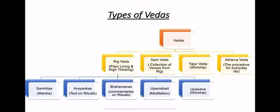Now, the types of Vedas. For simplicity, I have divided the Vedas into four parts. The four types of Vedas are: Rig Veda, Sam Veda, Yajur Veda, and Atharv Veda. It is said that Rig Veda is the first one, followed by Sam, Yajur, and Atharv Veda.